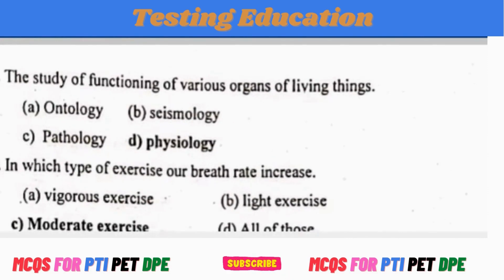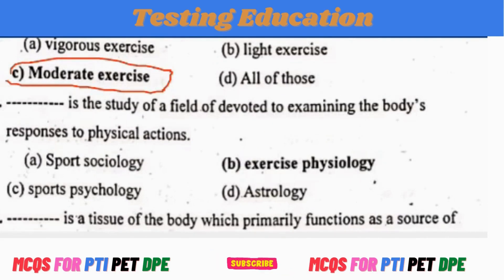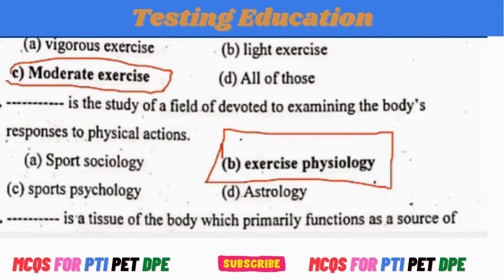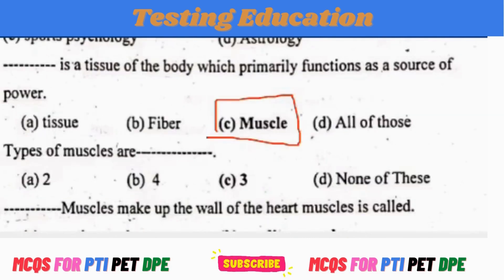The study of the functioning of various organs of living things is Physiology. In moderate exercise, our breathing rate increases. The study of the field devoted to examining the body's response to physical activity is Exercise Physiology. The tissue of the body which primarily functions as a source of power is muscle. The three types of muscles are smooth muscle, cardiac muscle, and skeletal muscles.